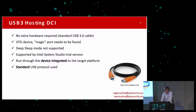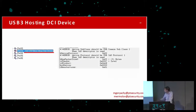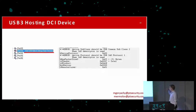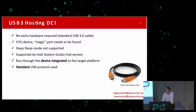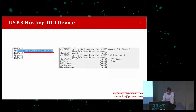This USB Hosting DCI is a debugging cable that functions as an OTG device. This device receives activation from the host. So it looks like this — it is a device, it is the motherboard. The commands are sent through a USB interface. It translates that to JTAG — the format is translated to JTAG.